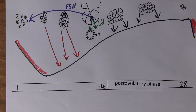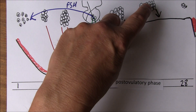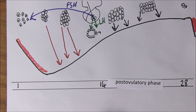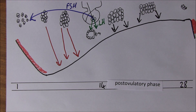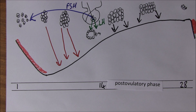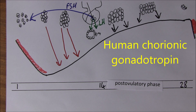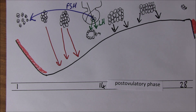If there is fertilisation, the corpus luteum will persist. It's actually supported by human chorionic gonadotrophin produced by the chorion of the embryo eight days after fertilisation. This is very useful because it means we can test for pregnancy at a relatively early stage by testing for human chorionic gonadotrophin in the blood or urine.